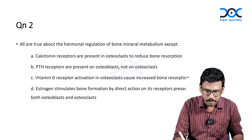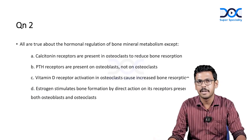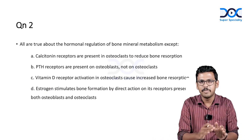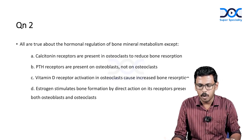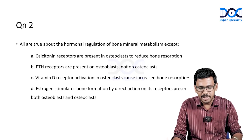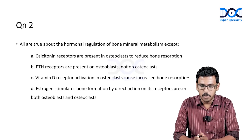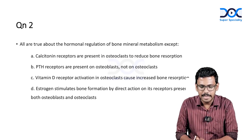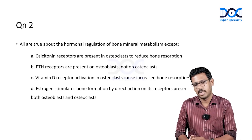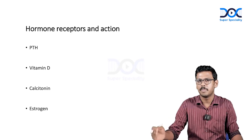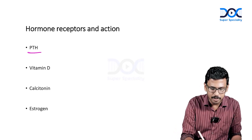Moving to question two: all of the following are true about hormonal regulation of bone mineral metabolism except — options include: calcitonin receptors present on osteoclasts reduce bone resorption; PTH receptors are on osteoblasts but not osteoclasts; vitamin D receptor activation in osteoclasts causes increased bone resorption; and estrogen stimulates bone formation by direct action on receptors in both osteoblast and osteoclast. PTH receptors are in the osteoblast.